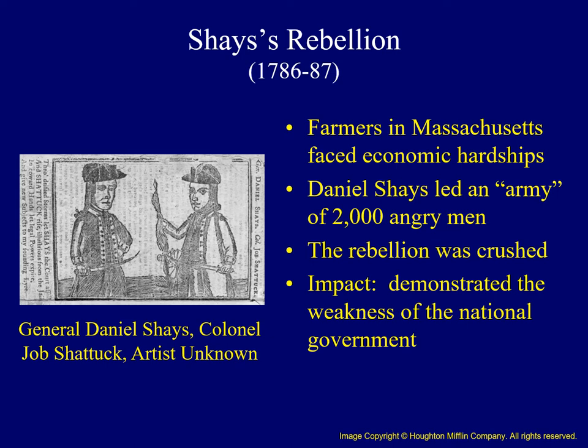Problems with the Articles came to the forefront with an event called Shays' Rebellion — a rebellion which involved many farmers living in western Massachusetts. Many found themselves in debtors' prisons and their mortgages foreclosed as they had problems paying taxes on their land. Shays, a veteran of the Revolutionary War, got together an army of about 2,000 angry men who shut down the courts, thereby preventing any further foreclosures. Eventually Shays and his supporters were routed, but they highlighted the fact that the national government under the Articles was far too weak. Because of these problems, a meeting was held to fix the Articles of Confederation.